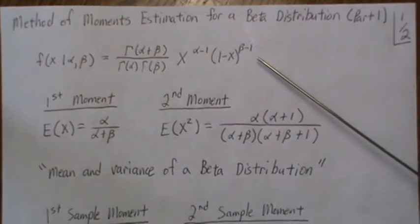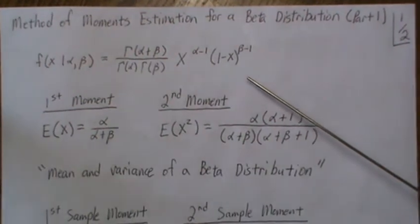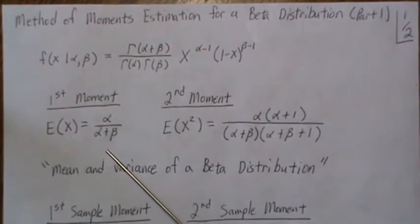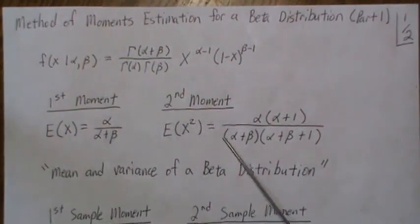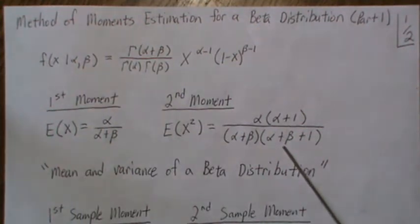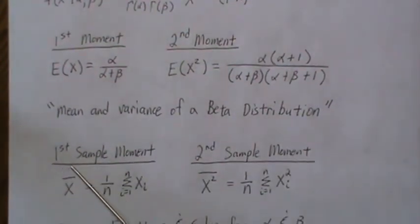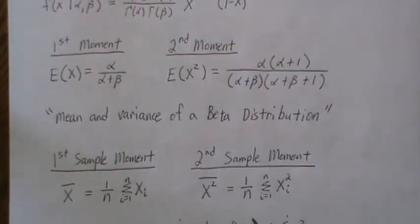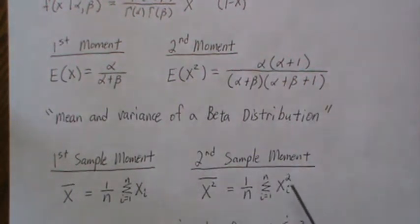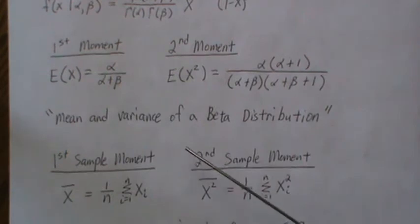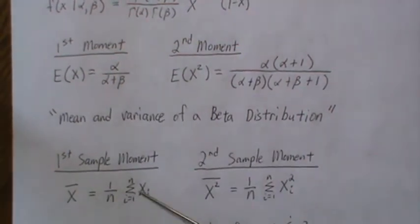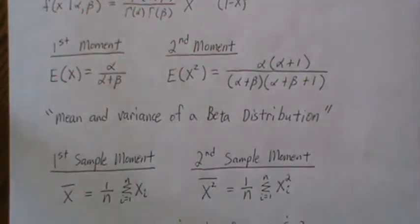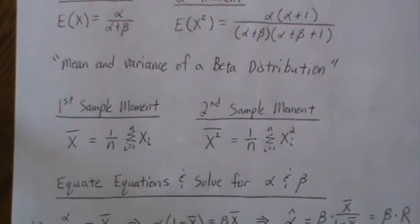So here's the beta distribution and I have a video called mean and variance of the beta distribution where we find the first moment and the second moment of a beta distribution. And then we know the first sample moment is just the mean, and the second sample moment is just the sum of the X_i squared's, averaged. And then what we do is we equate these two equations and these two equations and then back solve for alpha and beta. And so that's what the video is about is solving those equations.